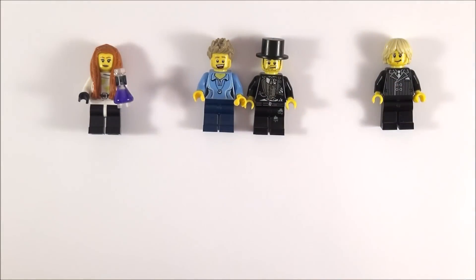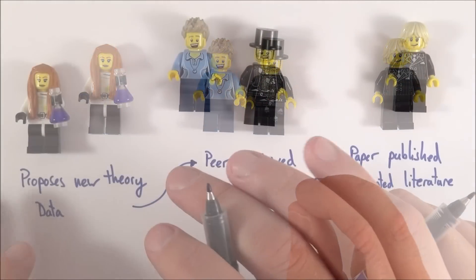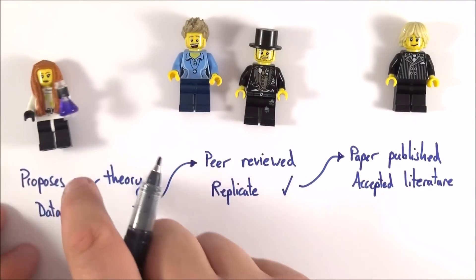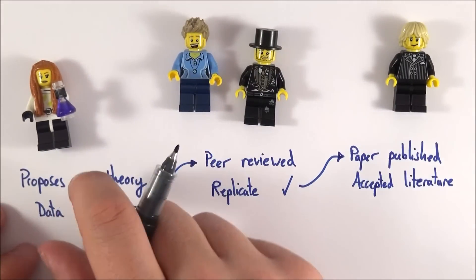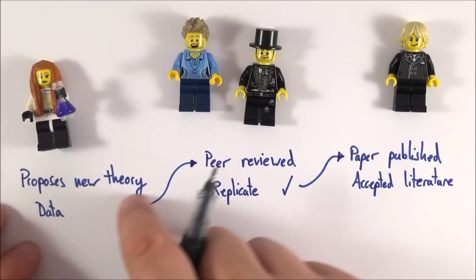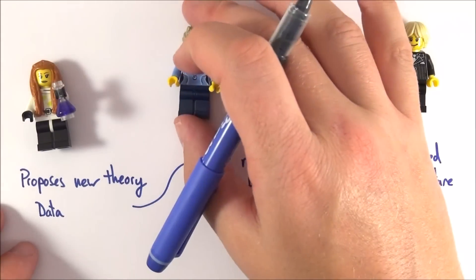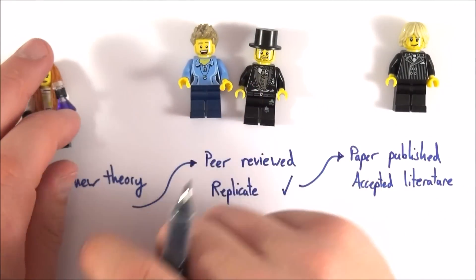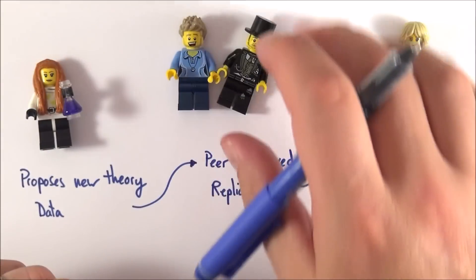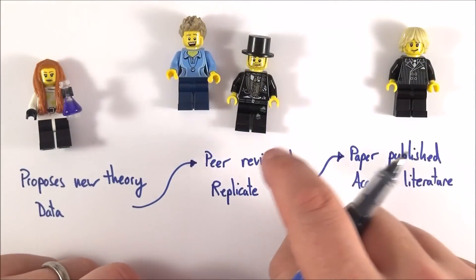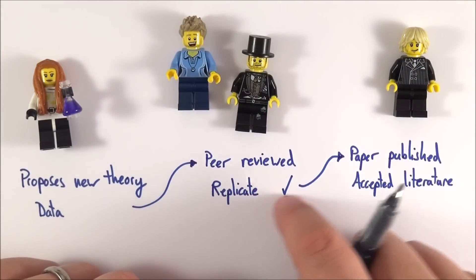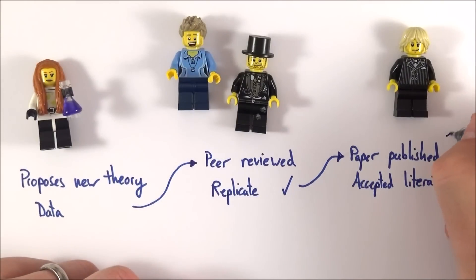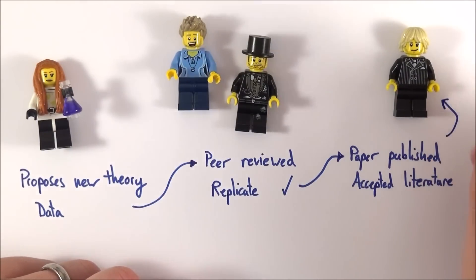If they find that it's all true, it all works, and they can replicate the data, what we then have is an accepted body of evidence. To summarize: a scientist, or often a group of scientists, proposes a new theory with some data to back it up. The paper gets peer reviewed by other scientists in the same field who try to pick holes in it and look for anything the first team may have overlooked. If they can replicate the data, the paper is published and becomes part of the accepted literature.